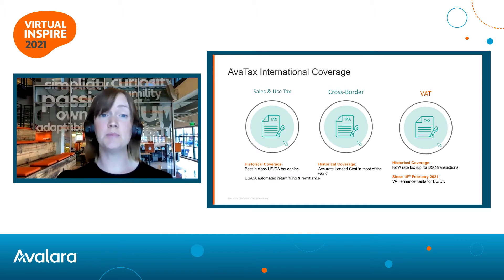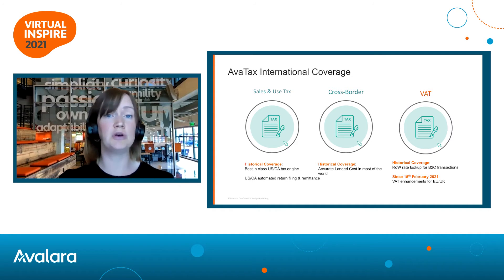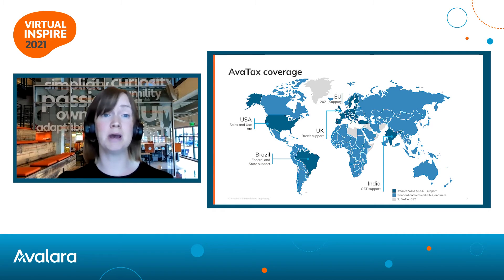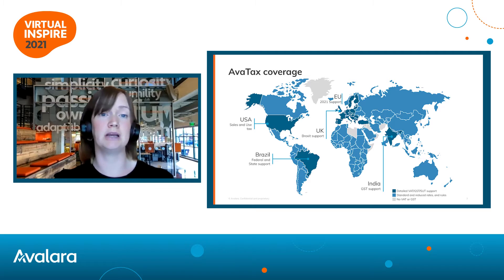As I mentioned, we now cover global VAT determination and rates, including enhancements for the EU, so specific EU place of supply rules, for example. And as you can see from this map, pretty much if there is an indirect tax regime, we will cover it. We now cover rates and determination in 193 countries worldwide.